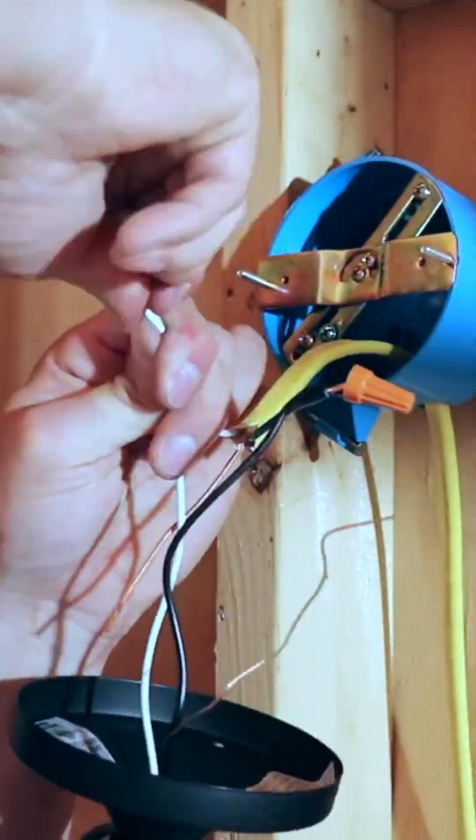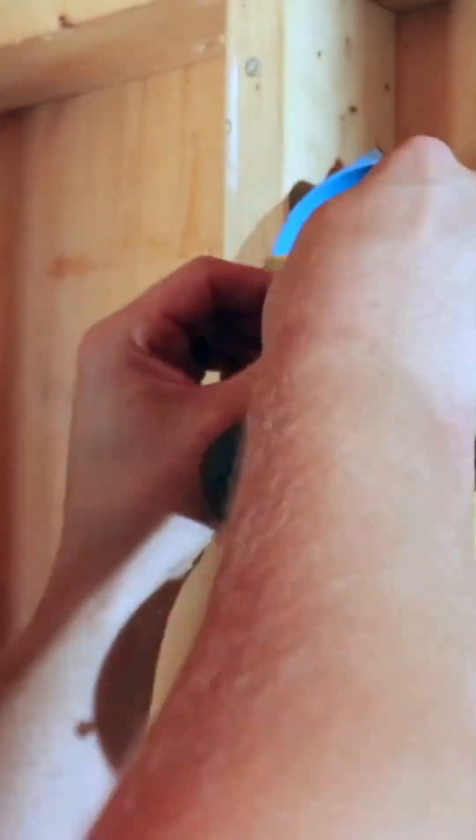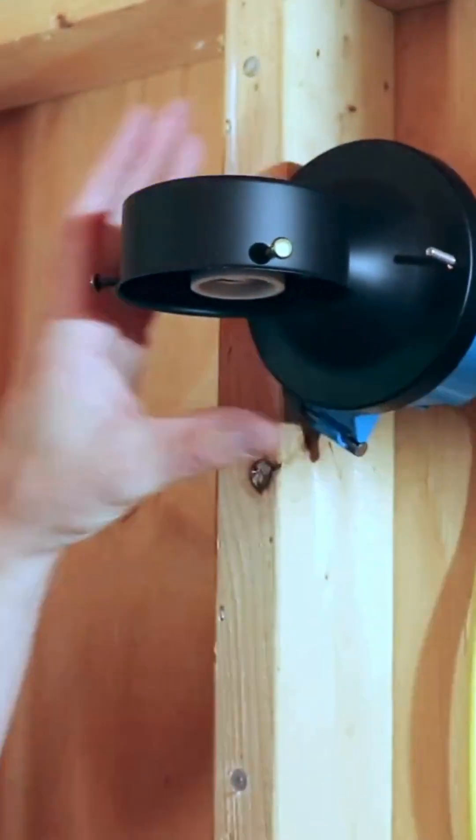After we have our switches wired up, we can connect our light fixture, which we can do by connecting our hot-to-hot, neutral-to-neutral, and ground-to-ground.